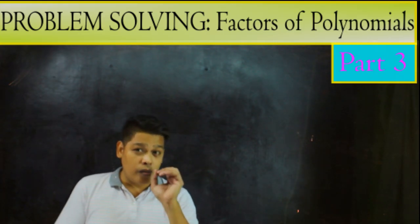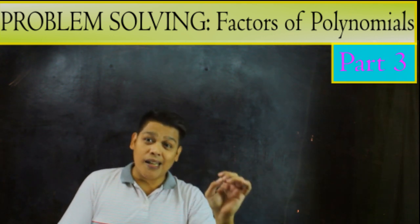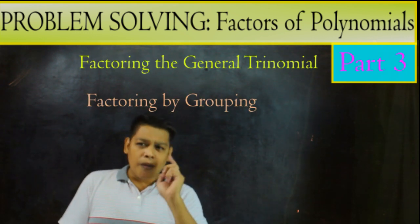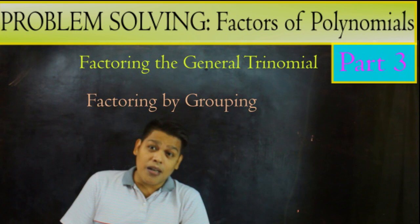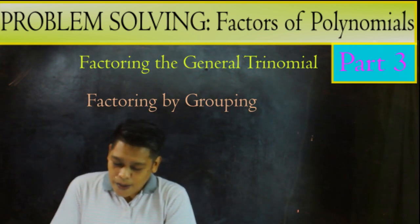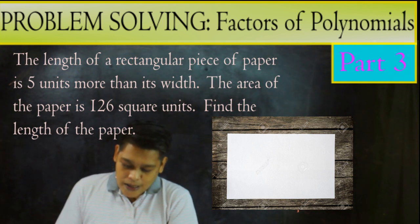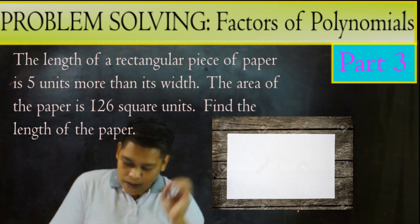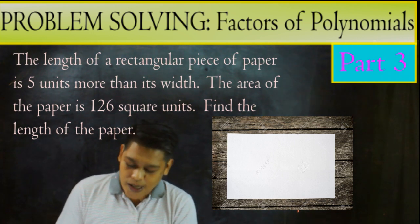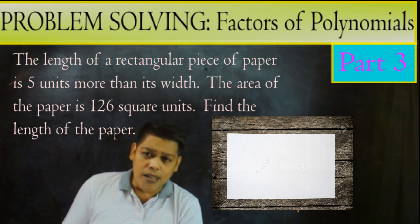In this video, we will cover the topics of factoring the general trinomial and factoring by grouping. So for example, number 1, this is factoring by general trinomial. The length of a rectangular piece of paper is 5 units more than its width. The area of the paper is 126 square units. Find the length of the paper.